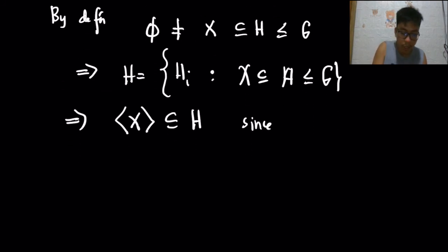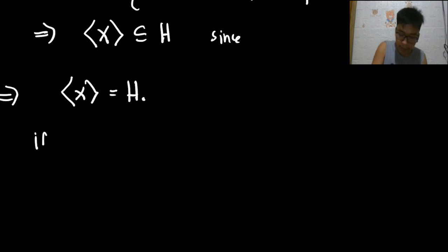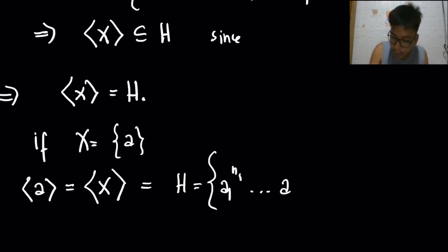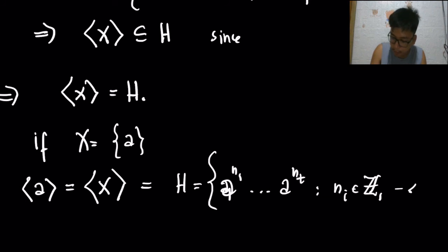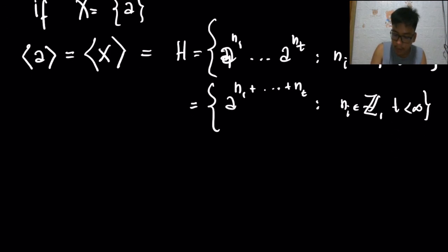We have concluded that H equals the subgroup generated by X. In particular, if X is the set containing A, then the subgroup generated by A equals the subgroup generated by X, which equals H — and is of the form A^N1 · · · A^NT where each NI is in Z and T is finite. By basic algebra, A^N1 · · · A^NT equals A^(N1 + · · · + NT). Collectively that sum equals N, so the subgroup generated by A is simply the set of all A^N for N in Z.